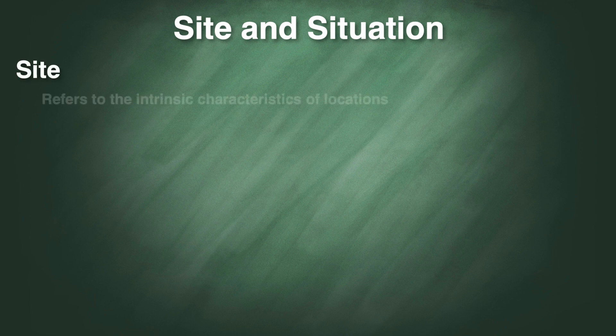Site refers to the characteristics of a particular location that are intrinsic to it. For example, a location might be along a river or along a sea. It could be forested, or it could have certain kinds of soils, and it has a very specific climate.